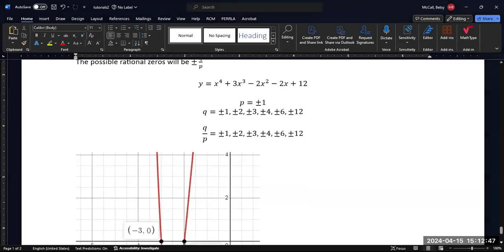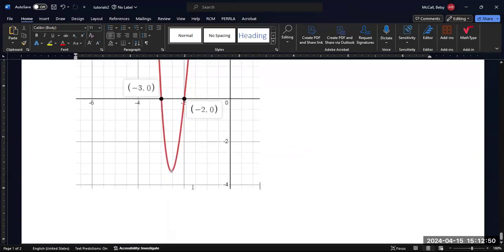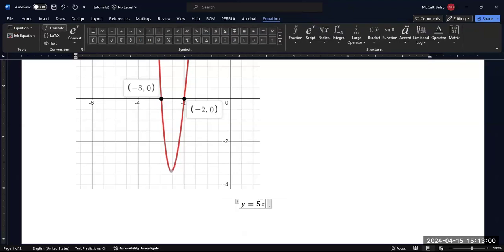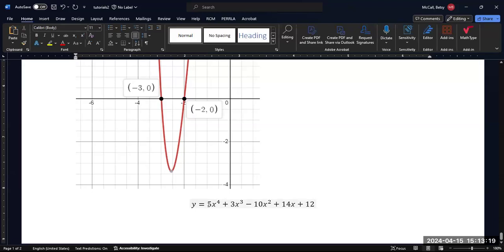Now let's try one more that has a leading coefficient, just so we can see how that works. Let's try y equals 5x to the fourth, and the degree of the polynomial doesn't really matter, 3x cubed minus 10x squared plus 14x plus 12. We have the same 12 on the end, but I've changed the leading coefficient here and some of the other coefficients.